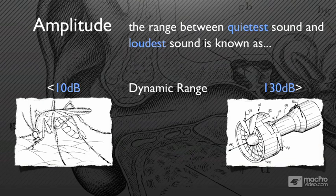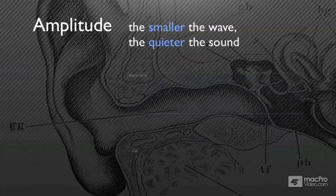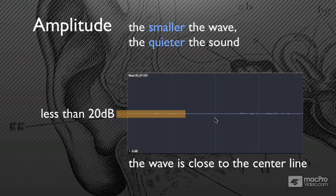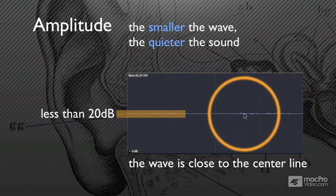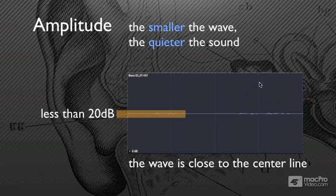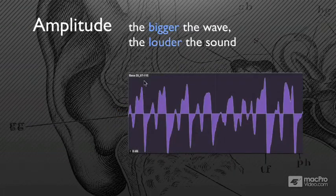So what does it mean for us? In the edit window of Pro Tools, it means that the tinier the waveform, the smaller the sound. These sounds right in here are just basically an open mic picking up rustling of clothing — they're under 20 dB and close to the center line. The closer something is to the center line, the quieter it is. Conversely, the taller something is away from the center line, the louder.